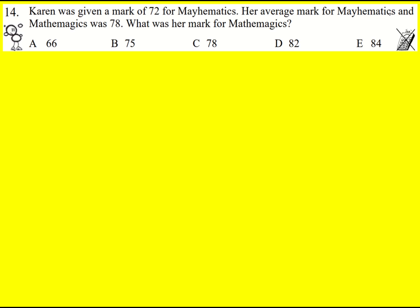We've got Mathematics and Mathemagics, and we're told that the mark for Mathematics was 72. We don't know the mark for Mathemagics, so let's call that x.